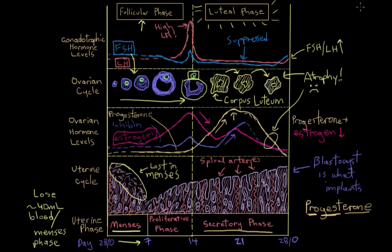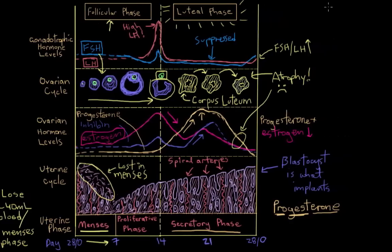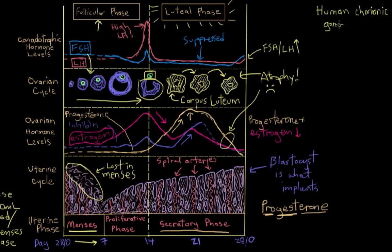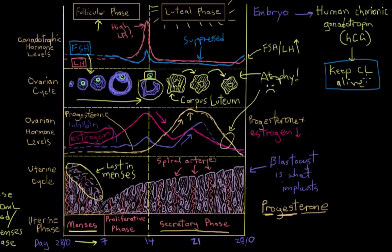Well, when a blastocyst implants into the endometrium and gets established there, the resulting embryo that develops from the blastocyst starts to produce a special hormone called human chorionic gonadotropin or HCG. And this HCG is structurally really similar to luteinizing hormone. So much so that levels of HCG produced by the embryo are enough to keep the corpus luteum alive. Because remember we said that the corpus luteum relies on LH to stay alive. And so now with the corpus luteum remaining alive, it can continue to produce that estrogen and progesterone that's necessary to maintain the endometrial lining and keep it nice and supportive of the pregnancy.